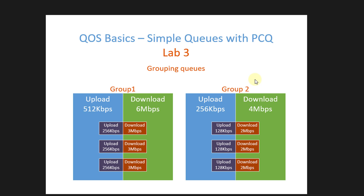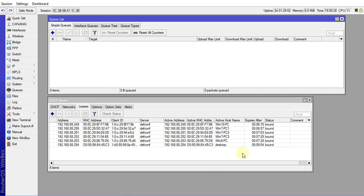Welcome back to another tutorial. Today we are going to look at grouping queues. I'm going to create two groups. The first group will have an upload limit of 512 kilobits per second and a download limit of 6 megabits per second, and all the users in that queue will be limited to 256 kilobits upload and 3 megabits download — that will include three users.